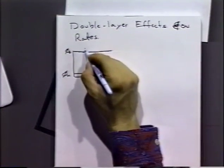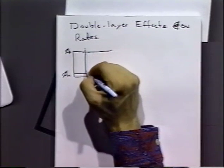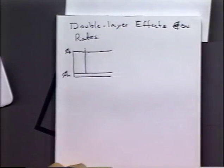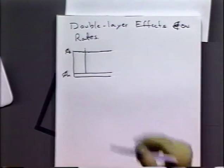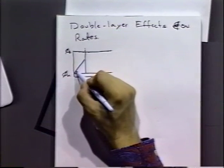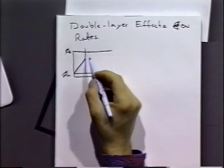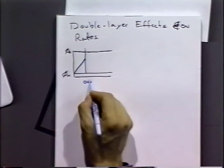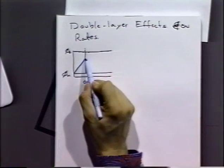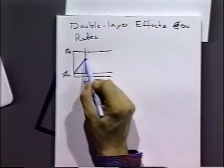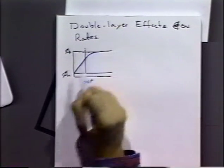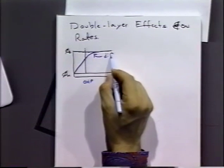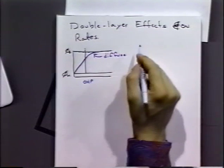Because these ions are adsorbed nonspecifically near the electrode surface, you get this phi-2 effect, where you get a linear potential drop in the region between the OHP and the electrode surface. And then because you've got ions near the electrode surface, you get another potential — a continuation of the potential drop in the so-called diffuse double layer.